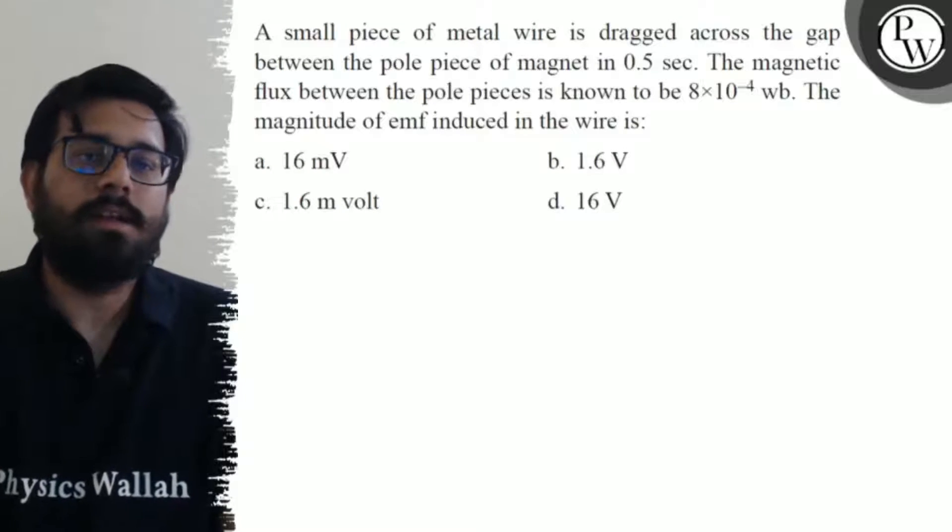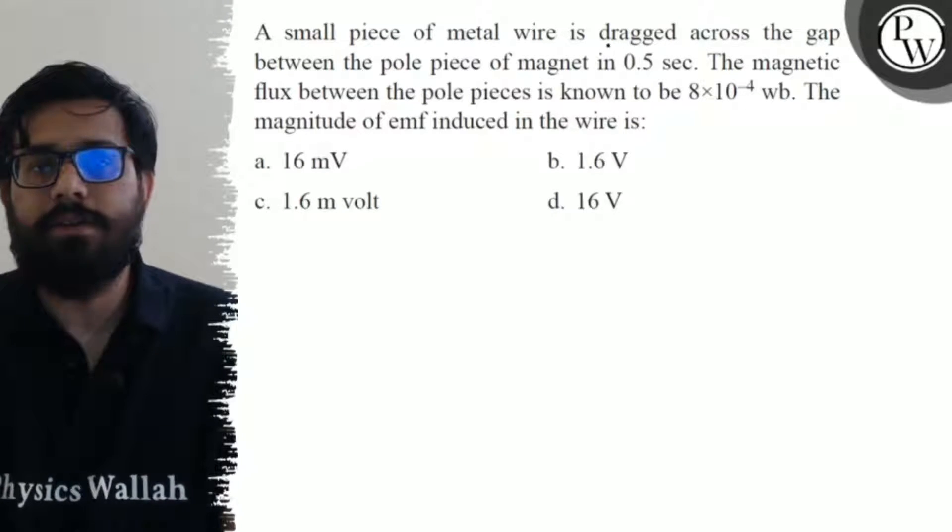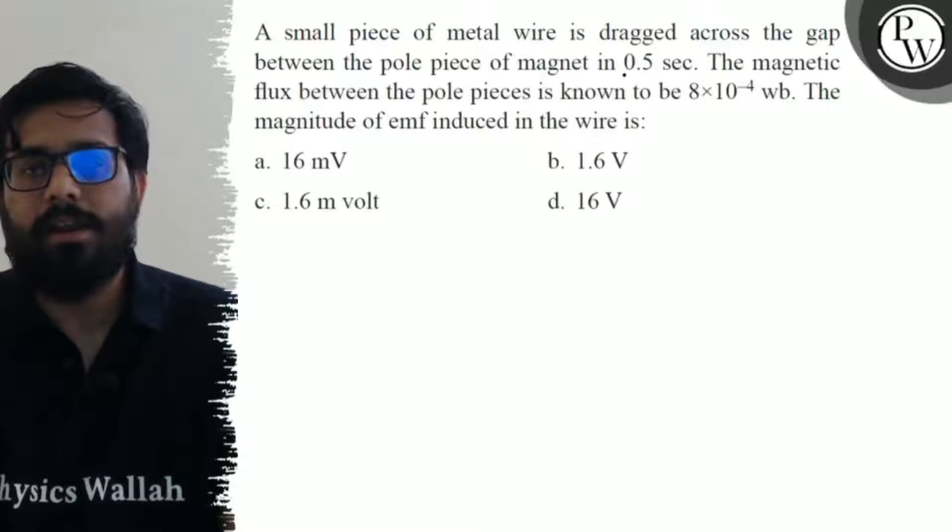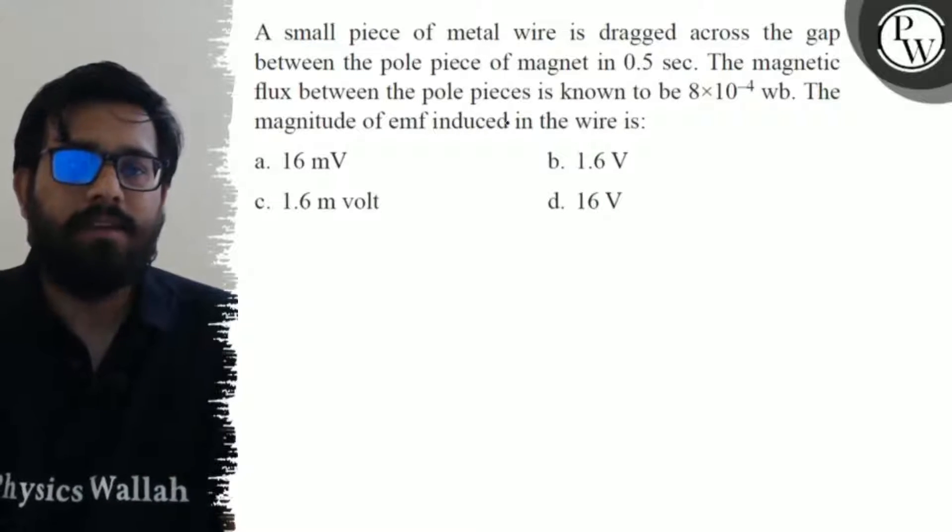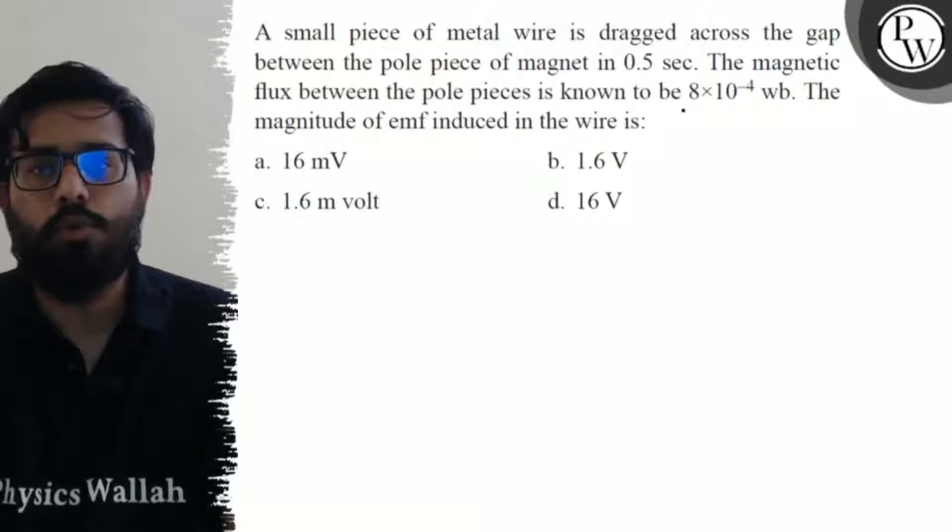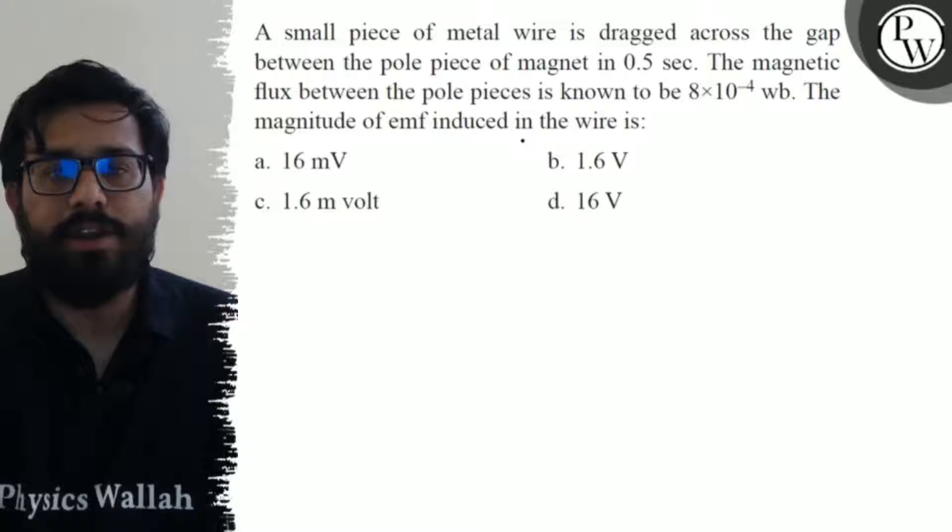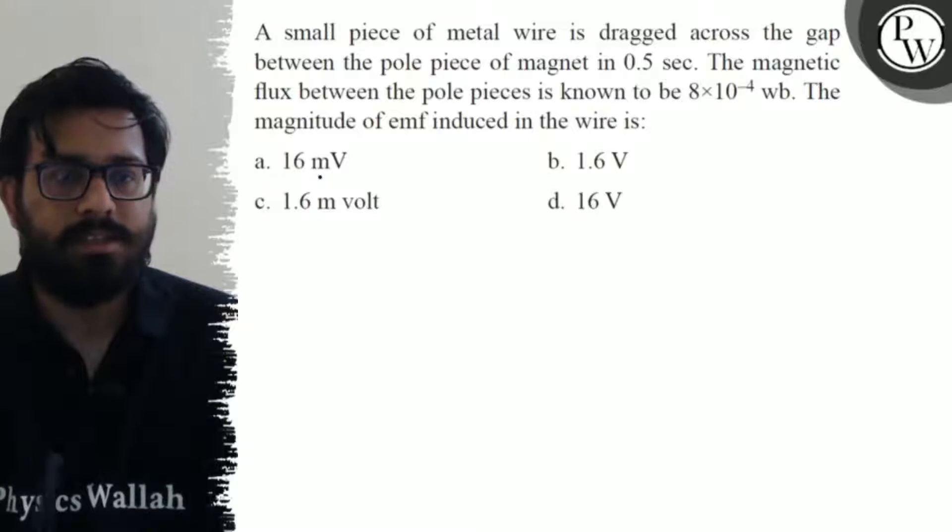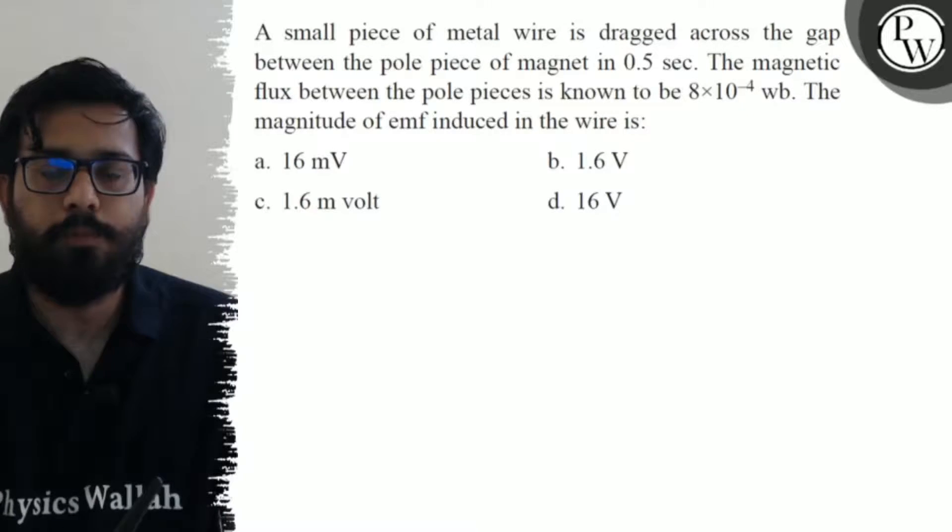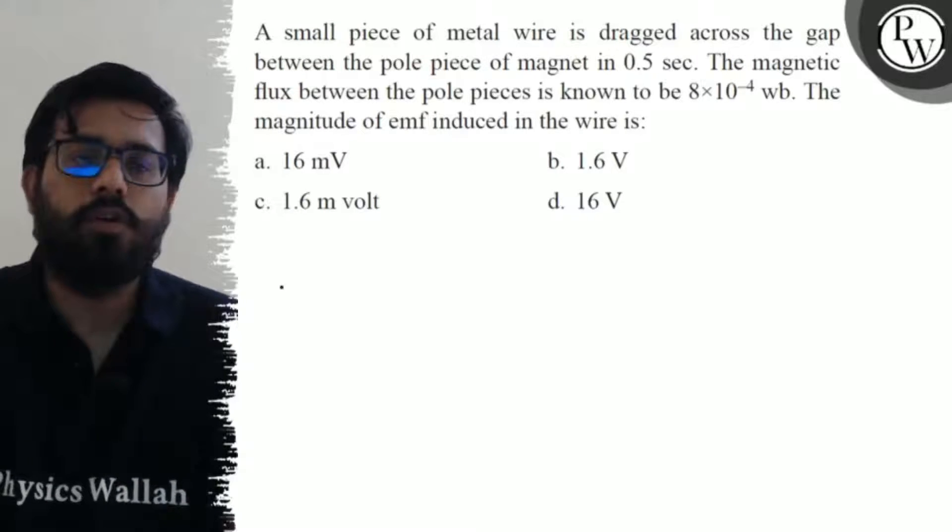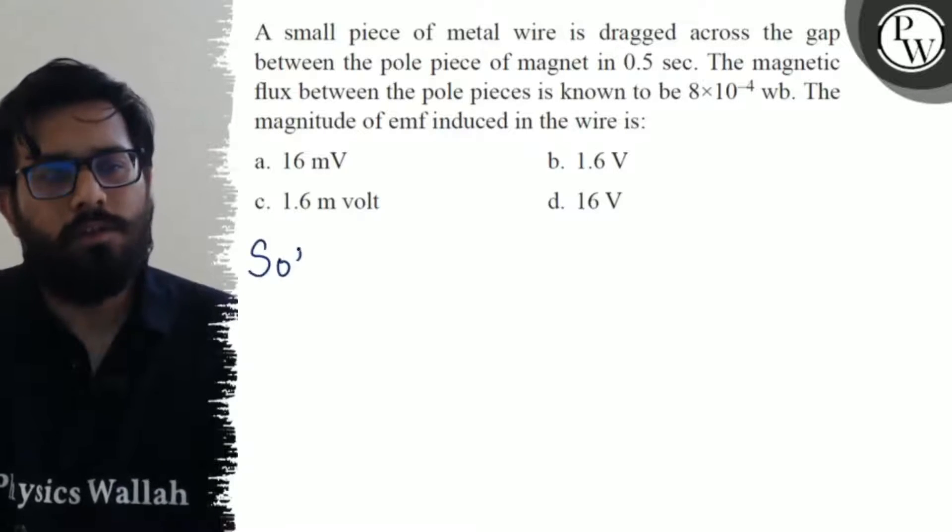A small piece of metal wire is dragged across the gap between the pole pieces of a magnet in 0.5 seconds. The magnetic flux between the pole pieces is known to be 8×10^-4 weber. The magnitude of emf induced in the wire is: a) 16 millivolt, b) 1.6 volt, c) 1.6 millivolt, and d) 16 volt.